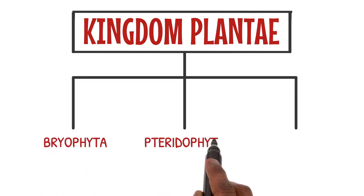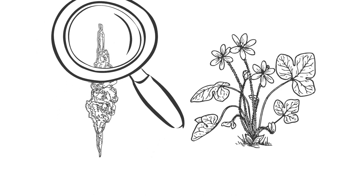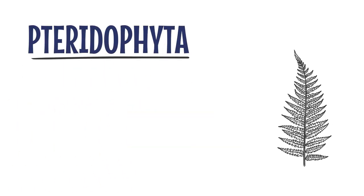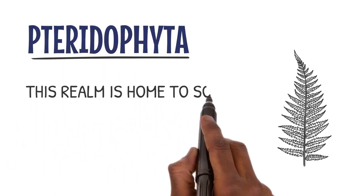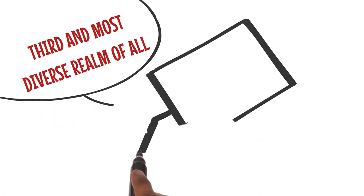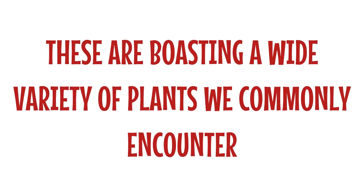Imagine a kingdom divided into three main realms, each with its own unique characteristics. In the first realm, we have the mighty Bryophyta. These incredible plants include mosses and liverworts. They may be small in size, but they play a crucial role in nature. Next, let's move on to the second realm called Pteridophyta, home to enchanting plants like ferns and horsetails. And finally, we arrive at the third and most diverse realm, the Spermatophyta, boasting a wide variety of plants we commonly encounter.